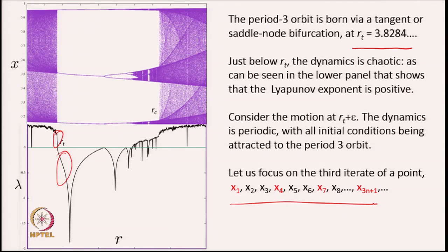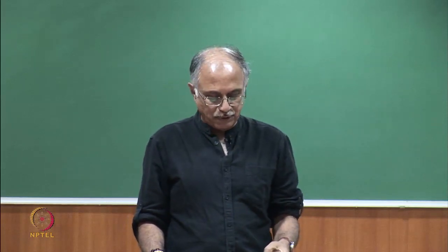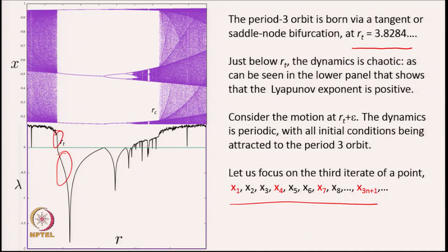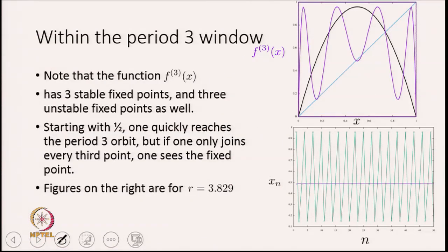If I take any arbitrary orbit and look at the third iterate of every point, within this period-3 window the function f³(x) has 3 stable fixed points and 3 unstable fixed points. Where the slope is greater than 1 the fixed point is unstable; where the slope is less than 1 it is stable. Three of the intersection points form the stable periodic orbit of period-3; the other three form the unstable periodic orbit of period-3.